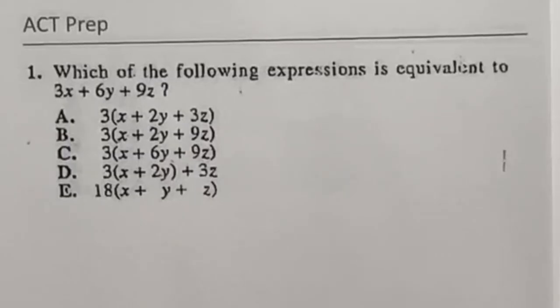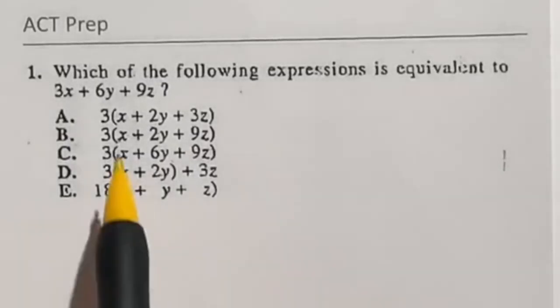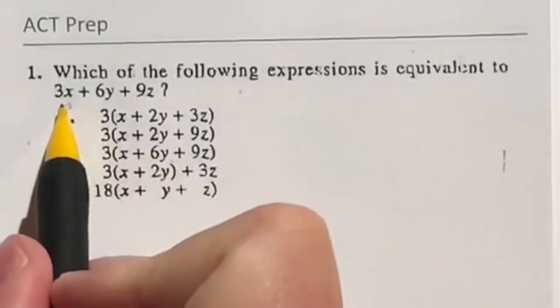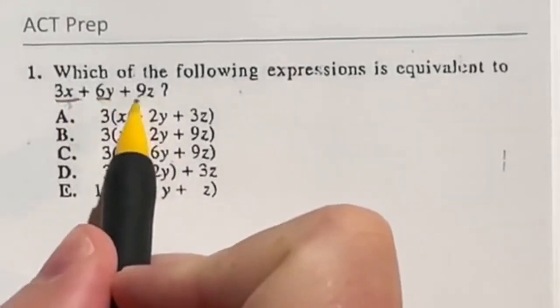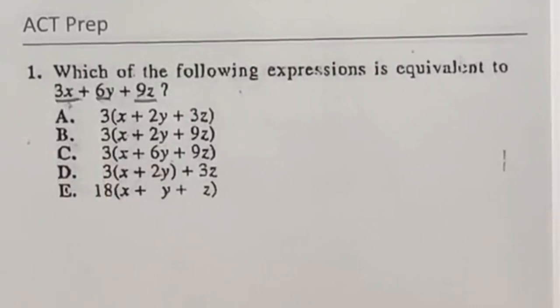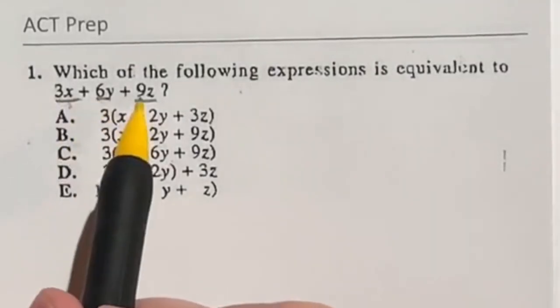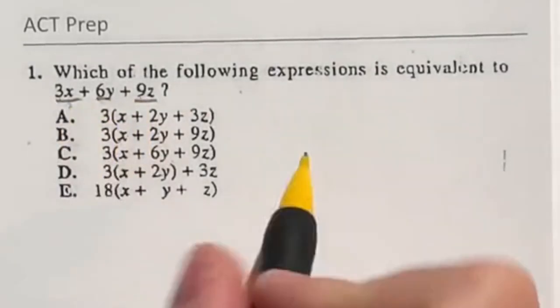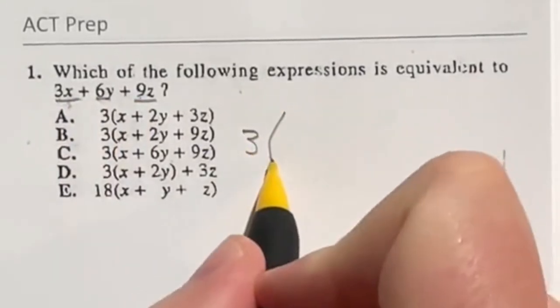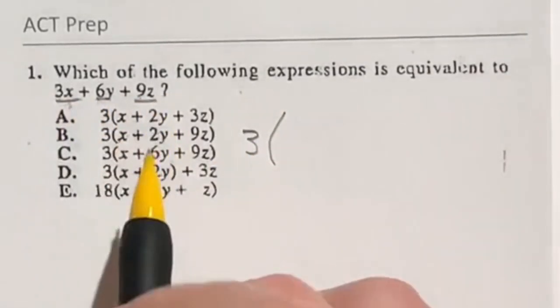So this question is actually the opposite of distribution. In this case we're factoring out a number. So if I look at all three of these terms is there anything that would divide all three of them evenly? In this case yes. Each of these three numbers are divisible by 3. When I pull 3 out front I'm then going to divide each one of these terms by that 3.